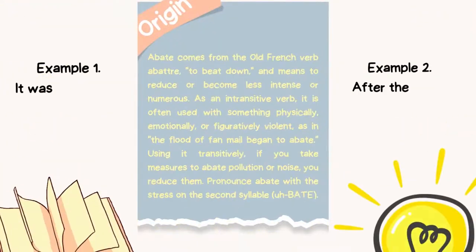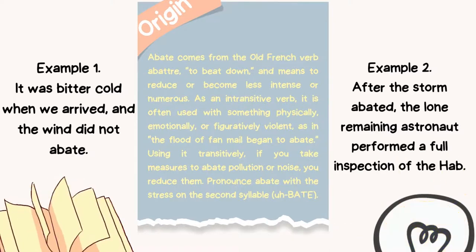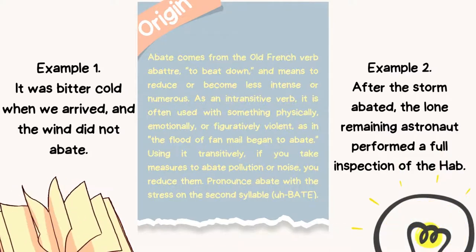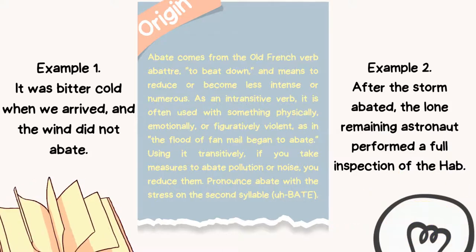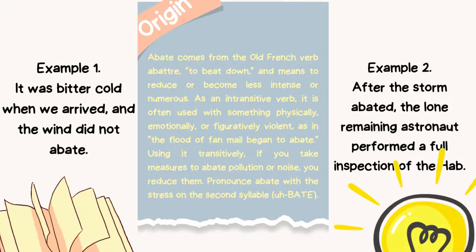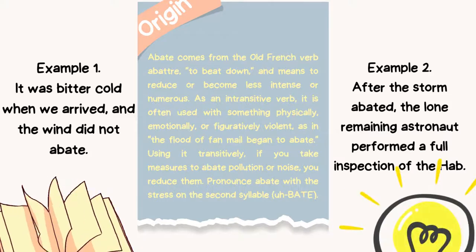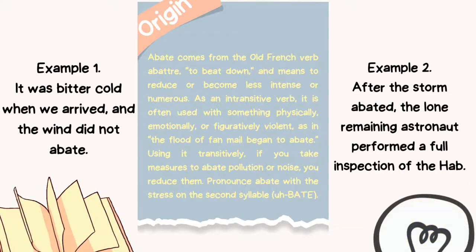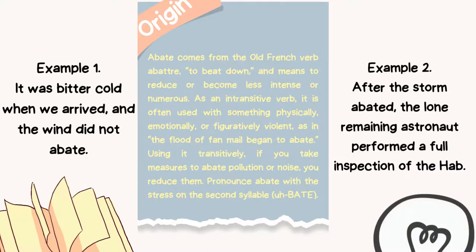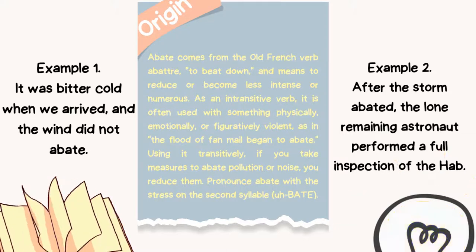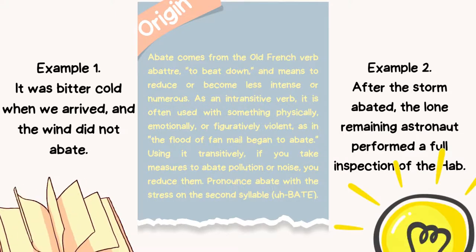Origin: abate comes from the old French verb "abatre," meaning "to beat down," and means to reduce or become less intense or numerous. As an intransitive verb, it is often used with something physically, emotionally, or figuratively violent — as in, "the flood of fan mail began to abate." Using it transitively, if you take measures to abate pollution or noise, you reduce them.